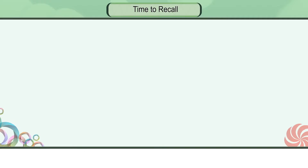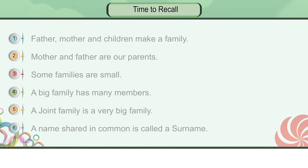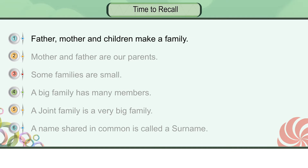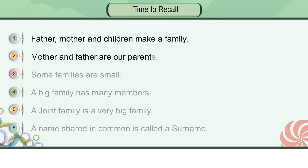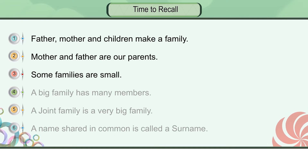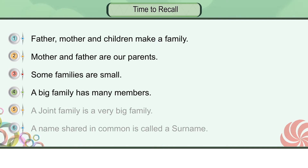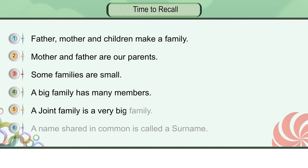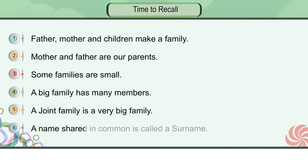Time to recall. Father, mother and children make a family. Mother and father are our parents. Some families are small. A big family has many members. A joint family is a very big family. A name shared in common is called a surname.